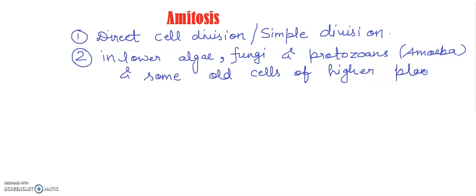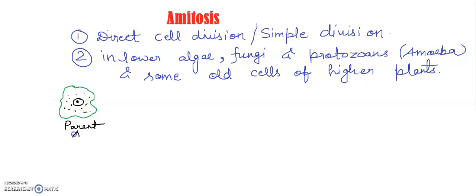I am going to draw a diagram here so you can easily see what amitosis basically is. Suppose this is any cell — an irregular cell — and the nucleus is found inside the cell. This is the nucleus, and the cytoplasmic content is filled inside the cell. Suppose this is the parent Amoeba. What will happen in this case when this cell undergoes amitosis?